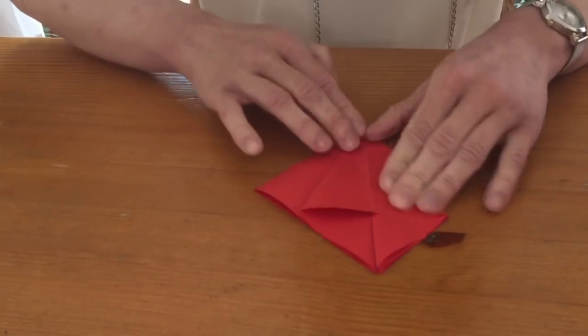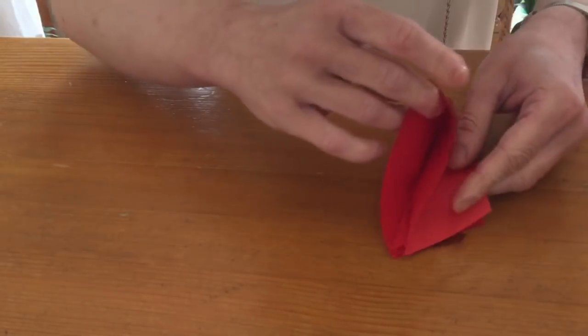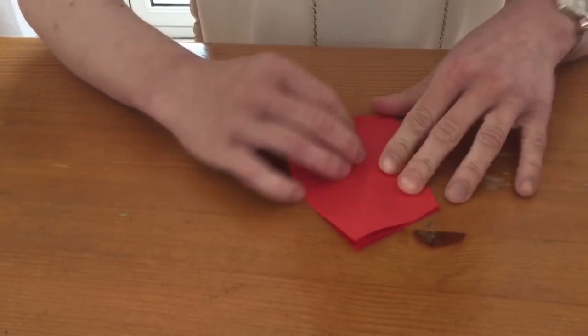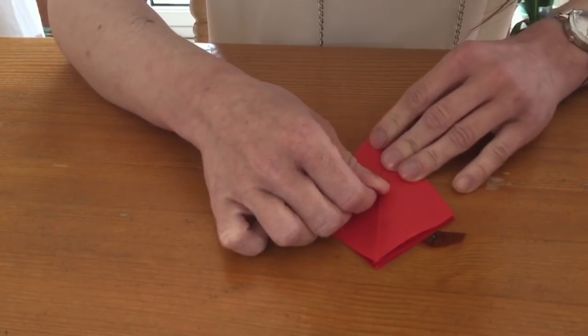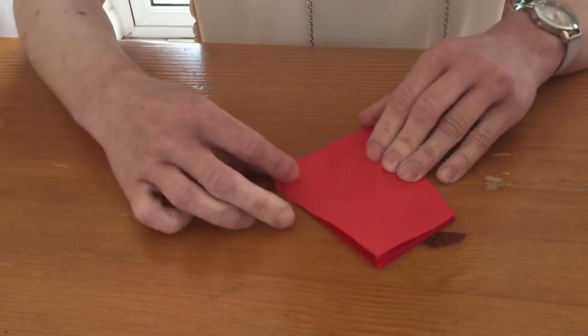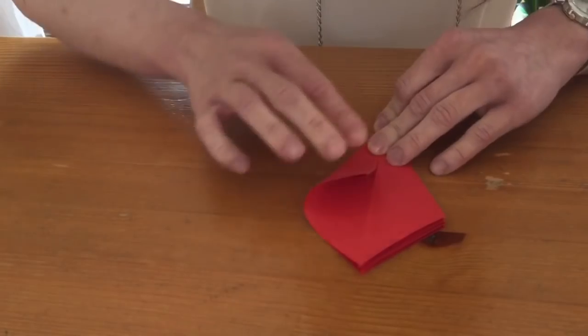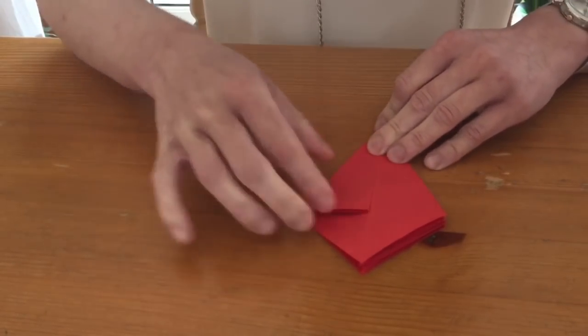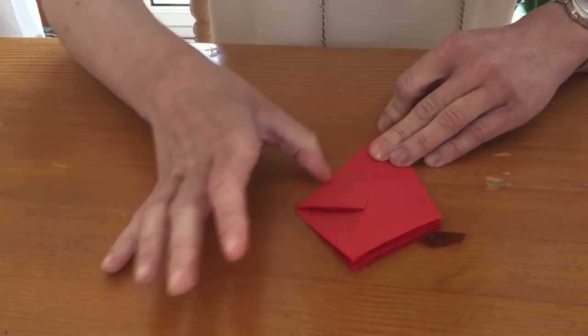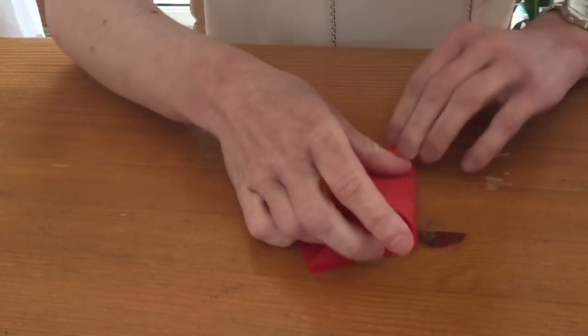So you basically repeat that with all your other two flaps, just like that. Make sure it's nice and even. So the reason why I just fold like this, it actually makes it easier instead of having to do that. It just makes things fall into place easier.